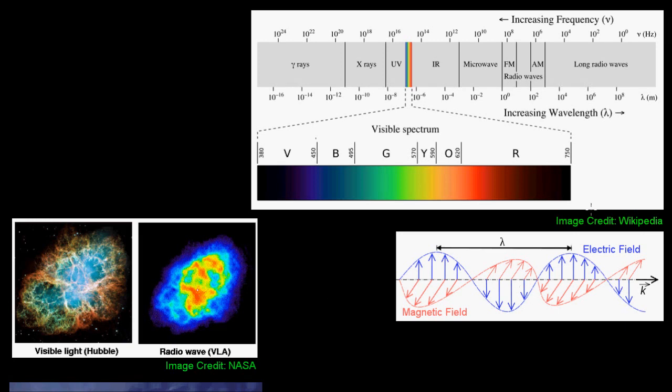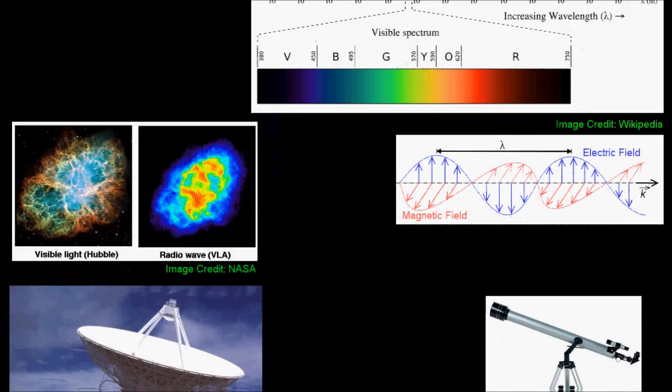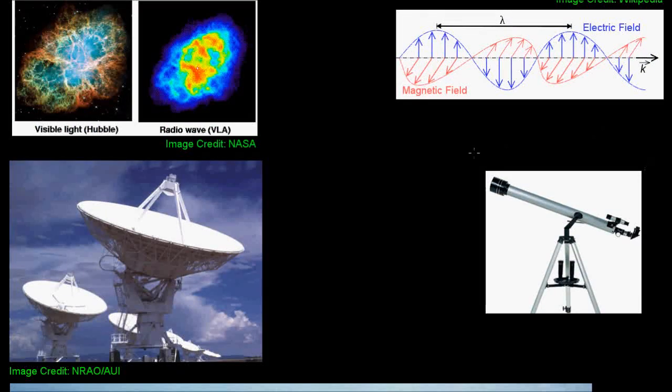Let's look at how we detect these different kinds of waves. Now, fundamentally, all light-based telescopes operate the same way. They collect electromagnetic radiation, focus it, and measure it.